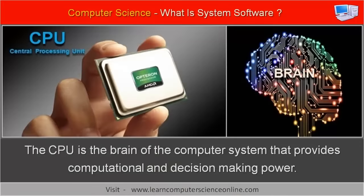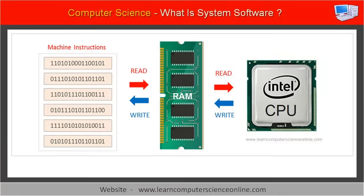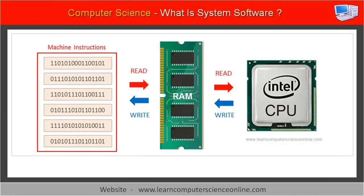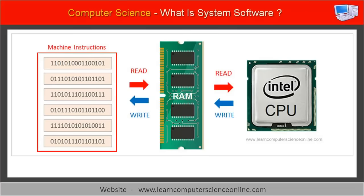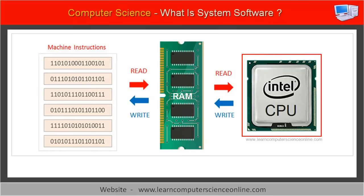The microprocessor, also called a central processing unit or CPU, is the brain of the computer. The CPU fetches these program instructions from the main memory RAM one by one. These machine instructions in binary can be decoded and directly executed by the microprocessor to perform various operations as per the program instructions.